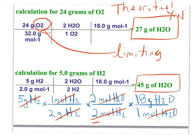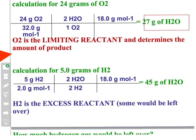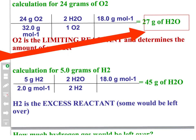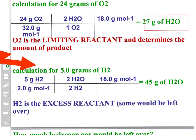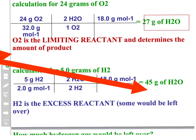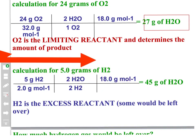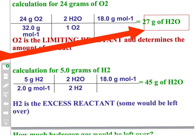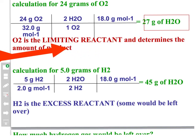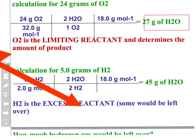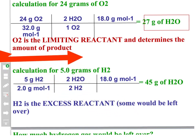This is how much we would theoretically produce. In summary, when we start with 24 grams of oxygen, we produce 27 grams of water. When we start with 5 grams of hydrogen, we produce 45 grams of water. The amount of product actually produced is the smaller amount, which is 27 grams of water. So O₂ is the limiting reactant and is used up completely, while hydrogen is the excess reactant and some of it is left over after the reaction stops.